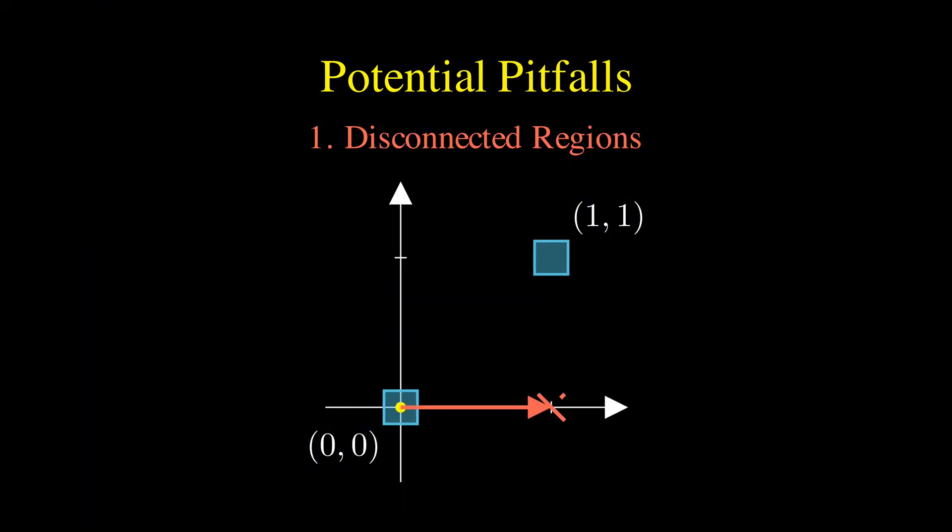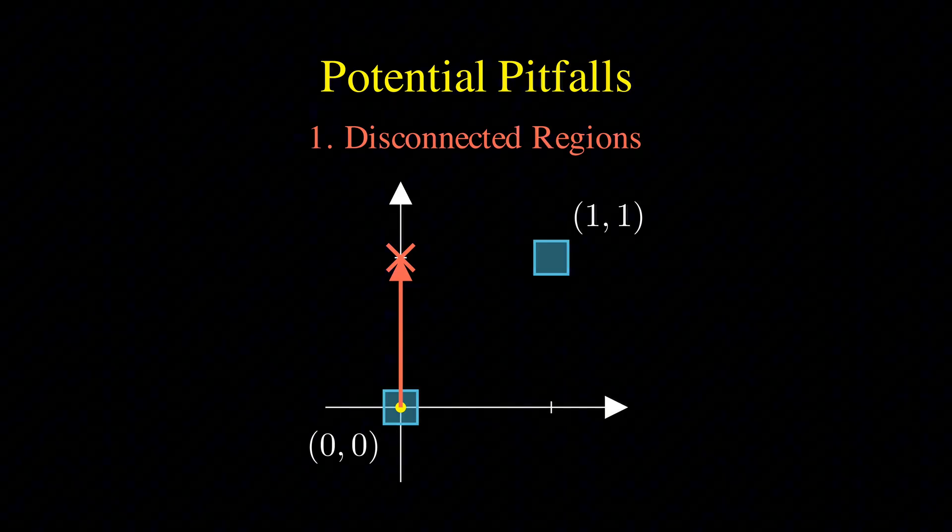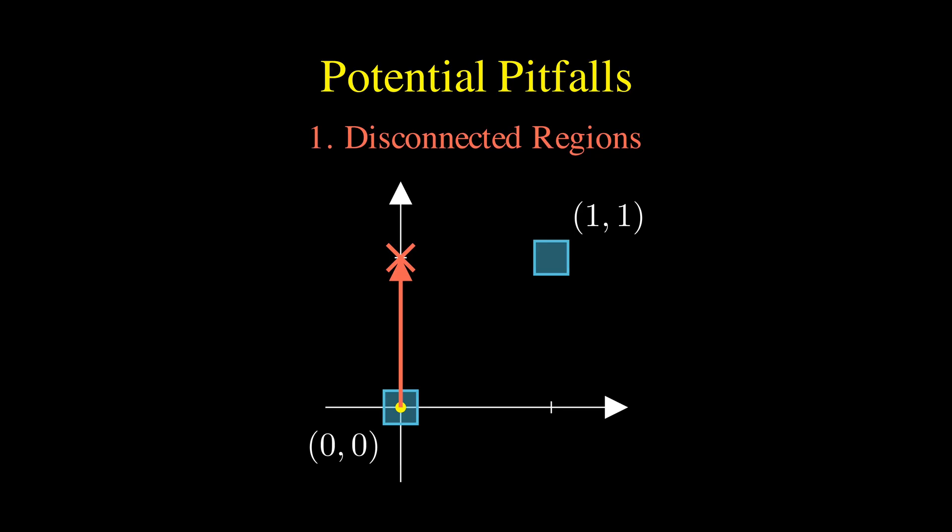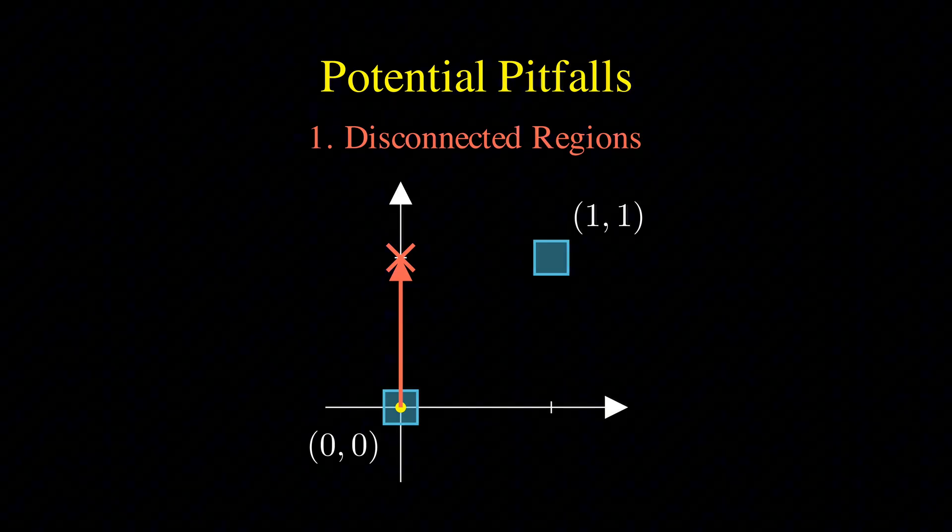If we start at 0,0, we can only move along the x or y axis. But since the probability everywhere else is zero, we're stuck. We can never reach the other island at 1,1 because we cannot make the diagonal leap required to get there.